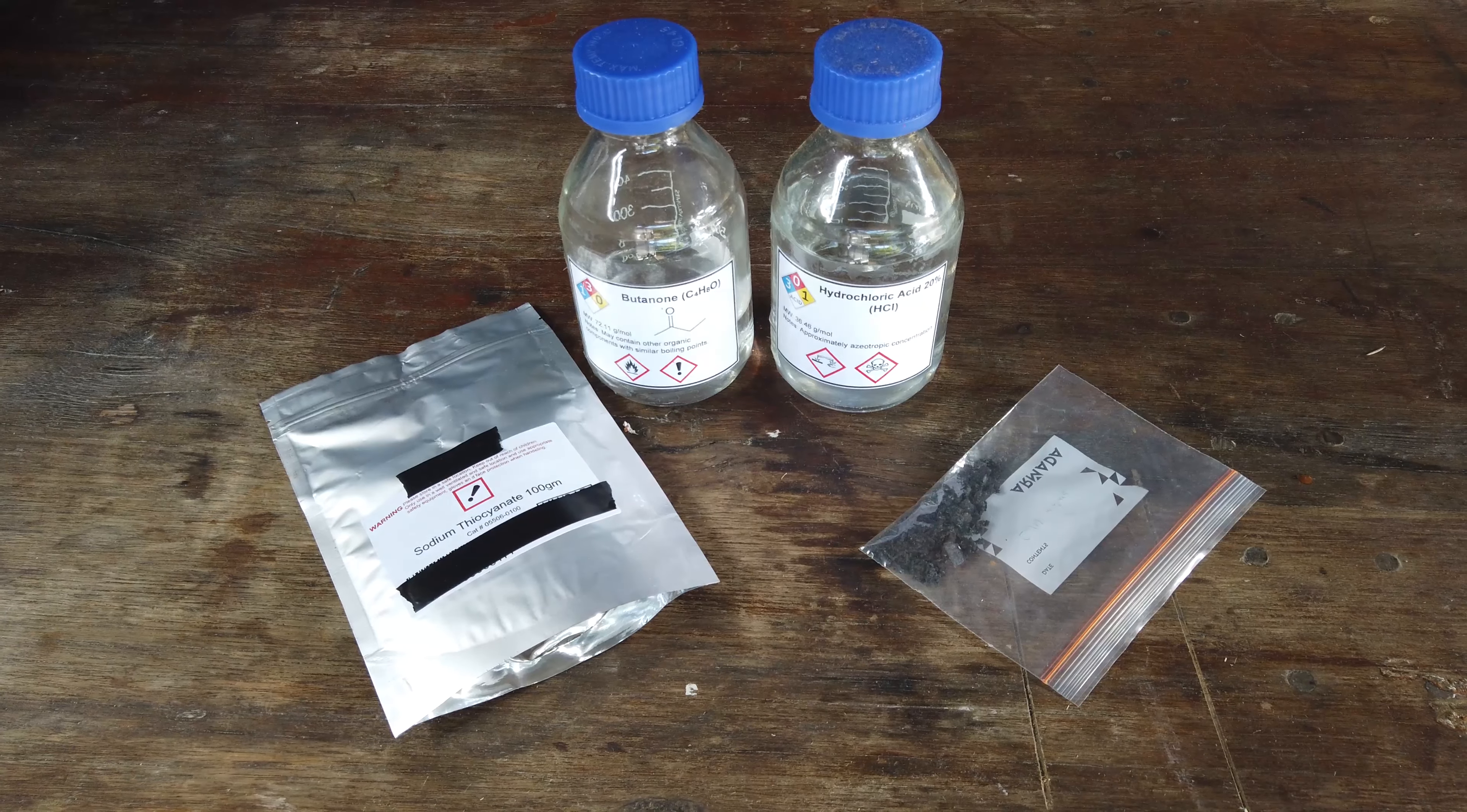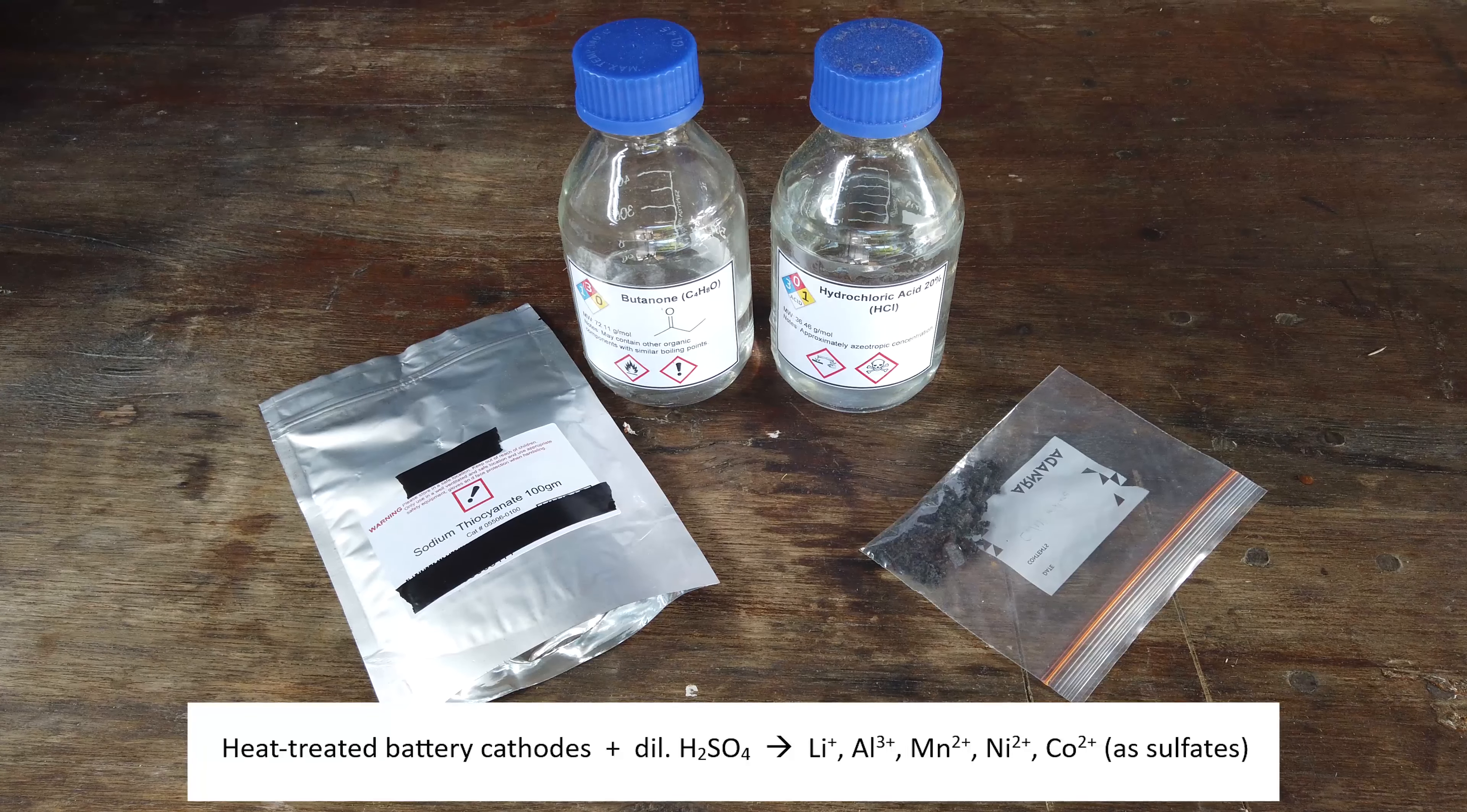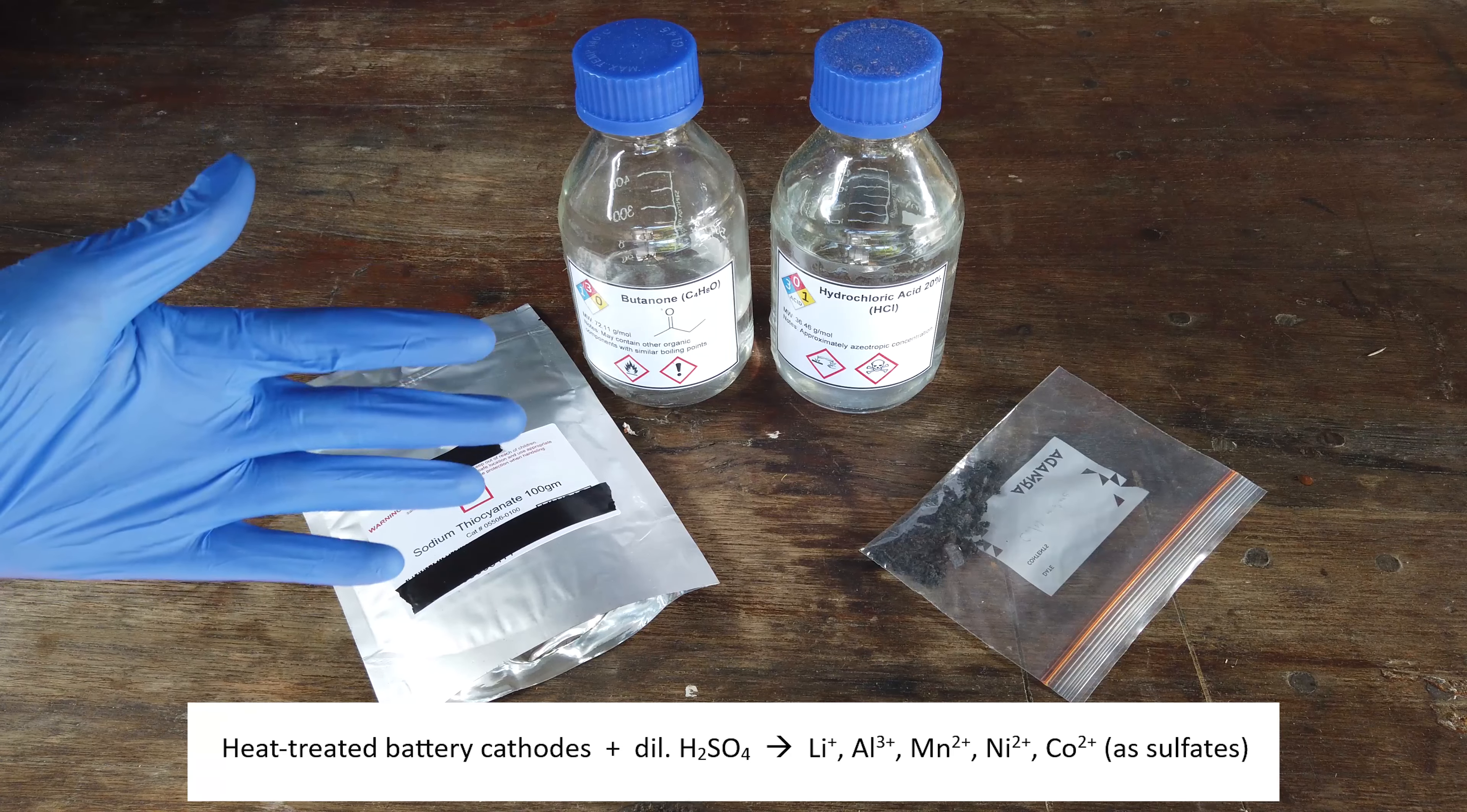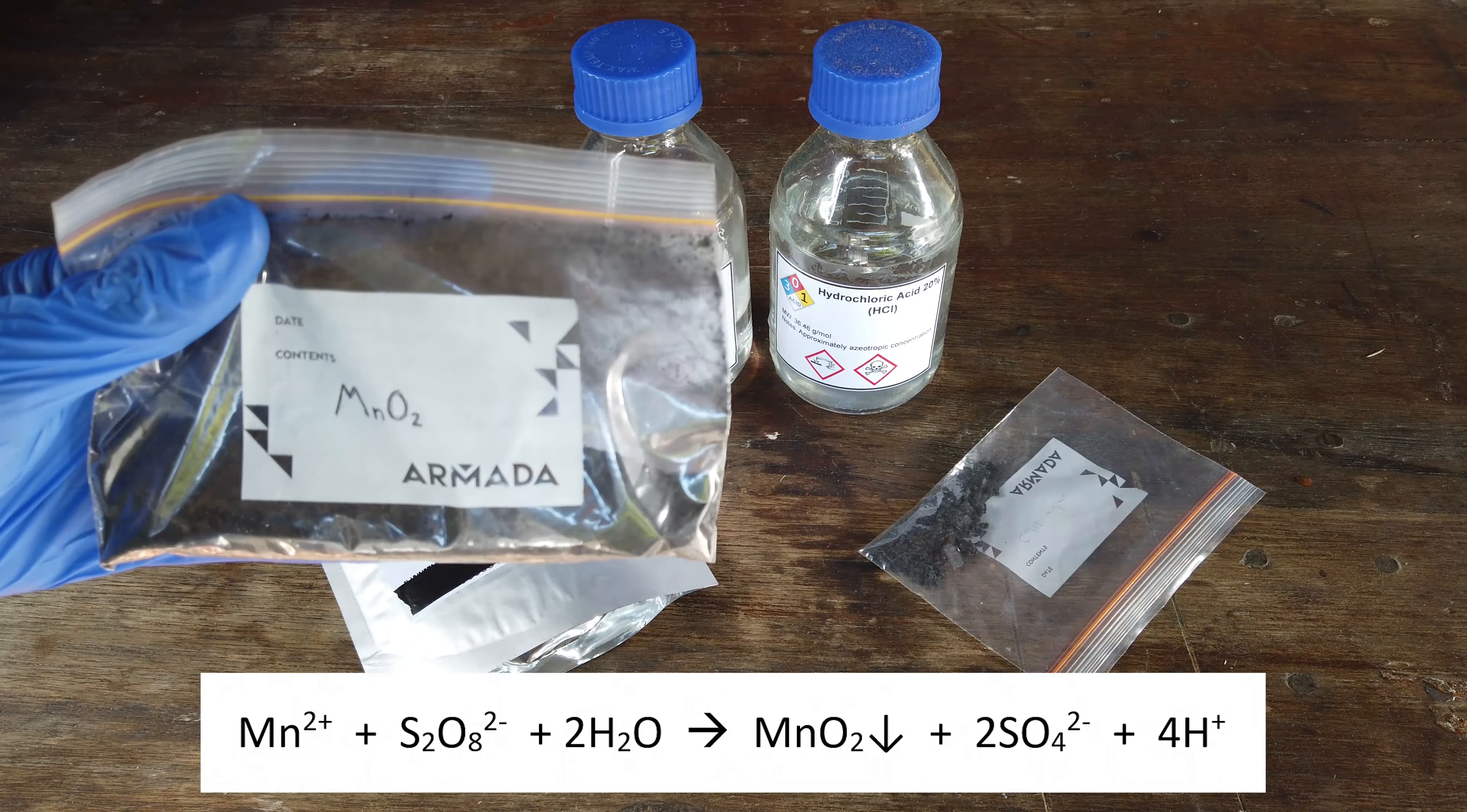Quick recap: we have painstakingly worked to dissolve up the electrode materials of around 160 watt-hours of lithium-ion battery. This gave us a big mess of a solution full of lithium, aluminum, nickel, cobalt, and manganese. We first separated out the manganese by oxidizing it to manganese dioxide, which we have purified and extracted here.